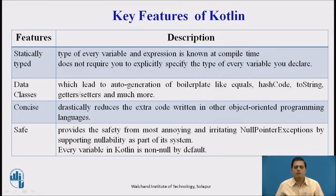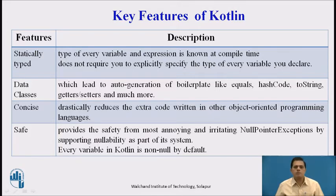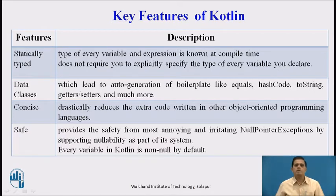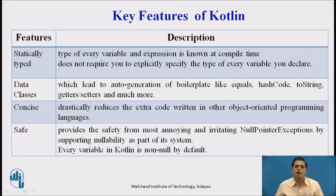Now we will see the key features of Kotlin. The first feature is statically typed. Statically typed is a programming language characteristic that means the type of every variable and expression is known at compile time. Although it is a statically typed language, it does not require you to explicitly specify the type of every variable you declare.